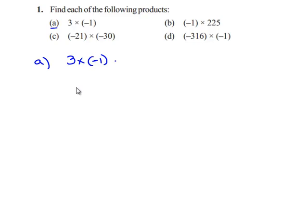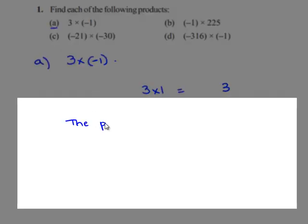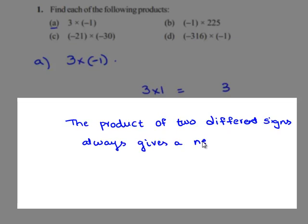First, we'll consider the values regardless of their signs and take the product of their values. The values are 3 and 1, therefore 3 into 1 equals 3. Then we take their signs. The sign of 3 is positive and the sign of 1 is negative. The product of two different signs always gives a negative sign, and the product of two similar signs always gives a positive sign.